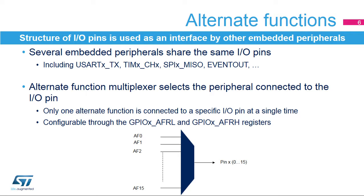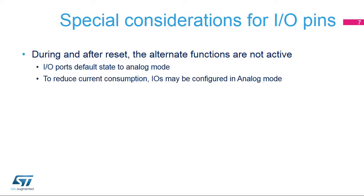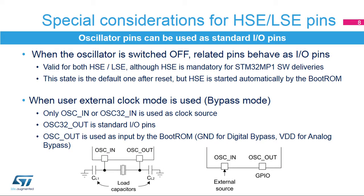This selection can be changed while the application is running through the GPIOX AFRL and AFRH registers. During and after reset, the alternate functions are not active. When the external oscillator is switched off, pins related to this oscillator can be used as standard I/O pins — this is the default state after device reset. When the external clock source is used instead of a crystal oscillator, only the OSC in-pin is used for the clock. Note that boot ROM makes use of the OSC out level during reset to define the bypass mode.